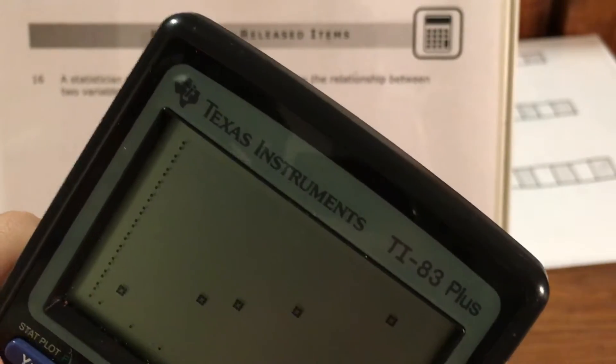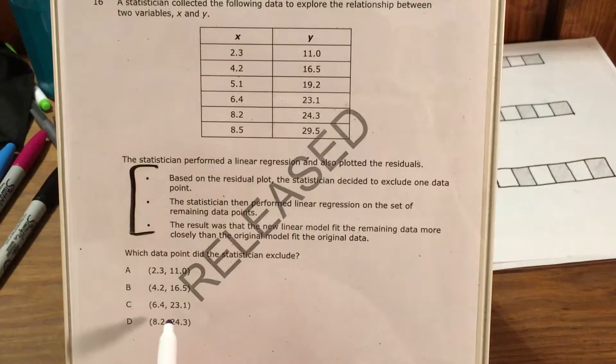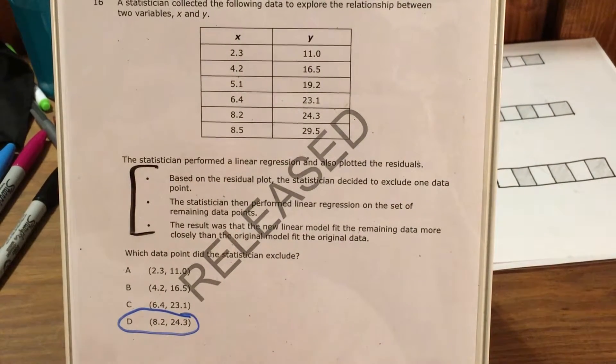And it's this information that is going to lead me to say that the point that doesn't belong is choice D, 8.2 and 24.3.